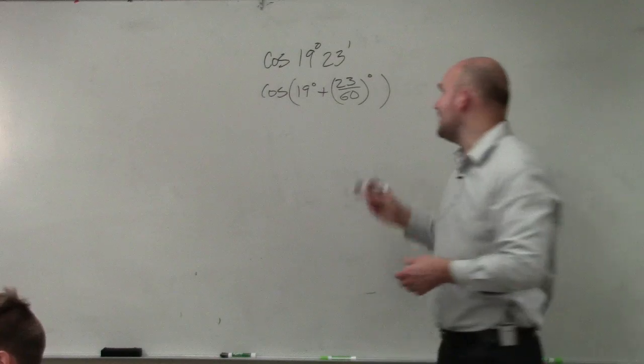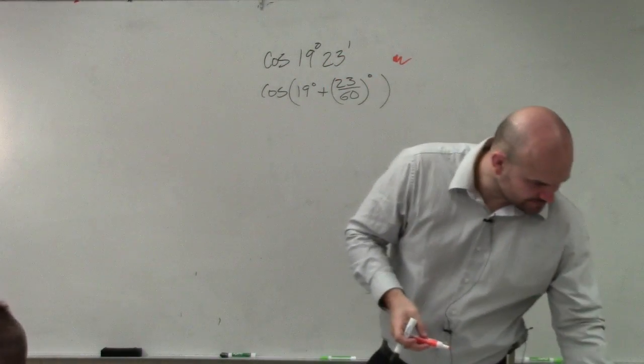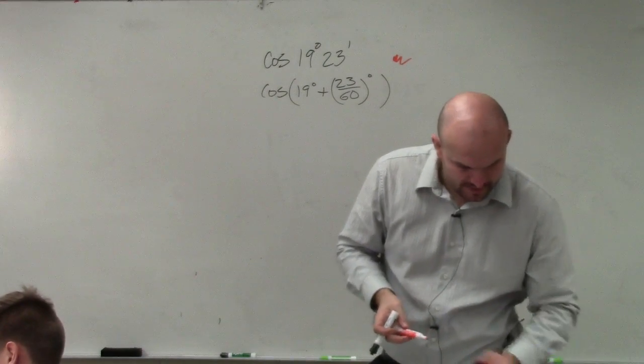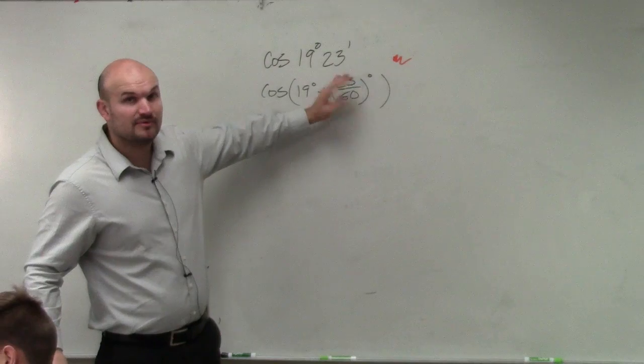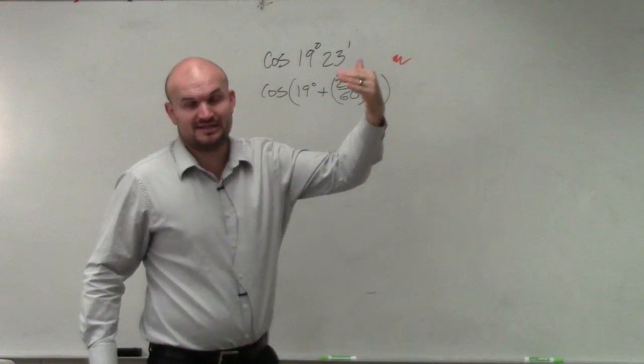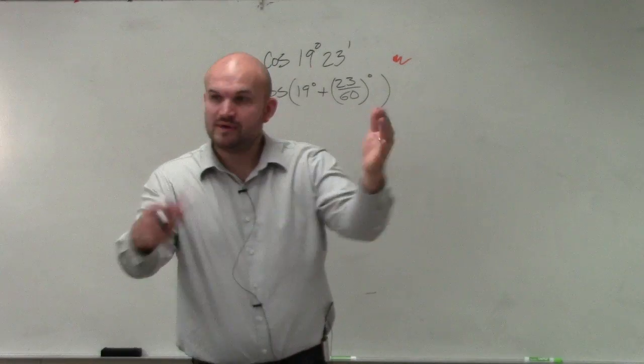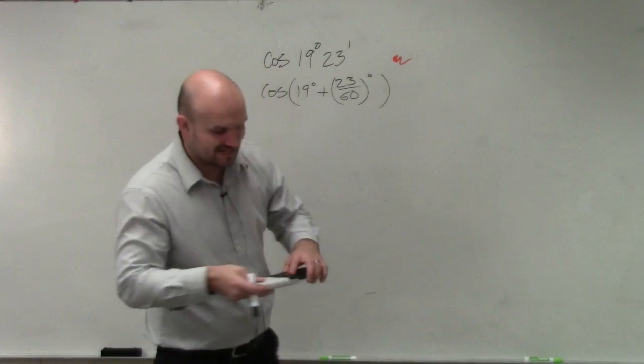Remember when we have our angles in minutes, we need to rewrite them as a decimal. So therefore, since there is 60 minutes in a degree, we have 23 out of 60. We need to be able to figure out what that decimal is.